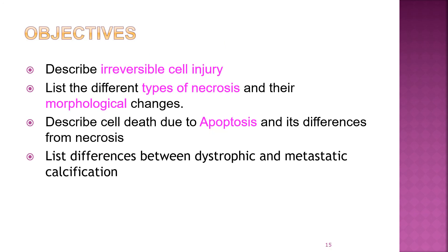In this lecture, we have described irreversible cell injury and listed the different types of necrosis and their morphological changes. We have described cell death due to apoptosis and its differences from necrosis, and listed the differences between dystrophic and metastatic calcification. Thank you.